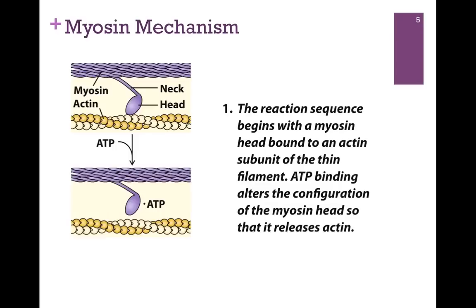Let's look overall at the effect of this mechanism and what's happening for each of those heads. Even though they can work independently, they each work the same way. We begin with the head and neck region — the head is slightly cocked back with respect to that neck and is in direct contact with the actin filament. First in the cycle, we bind ATP. That causes a conformational change so that the head region no longer has high affinity for actin and it lets go. Notice there's been no movement — all we've done is release the actin filament.